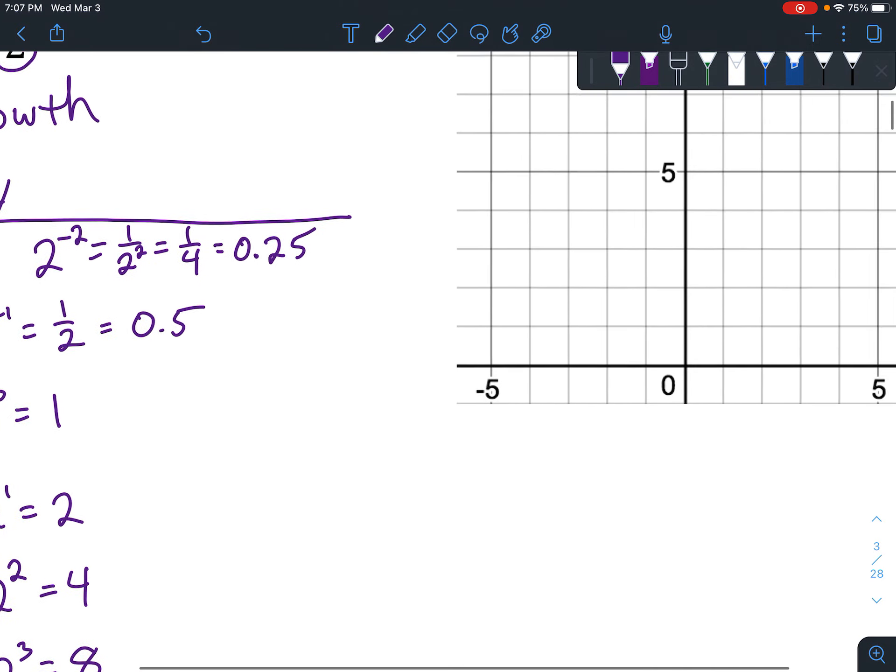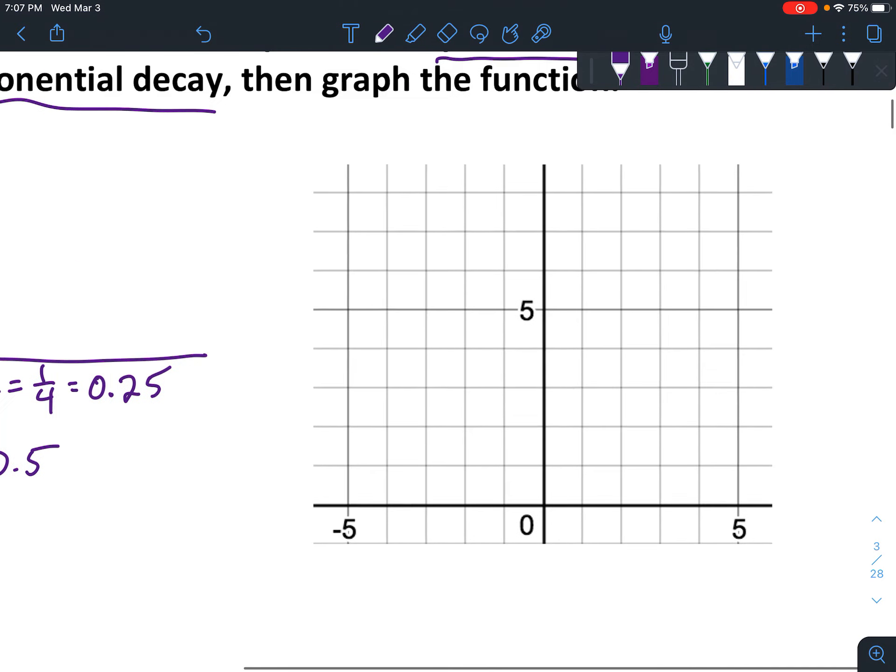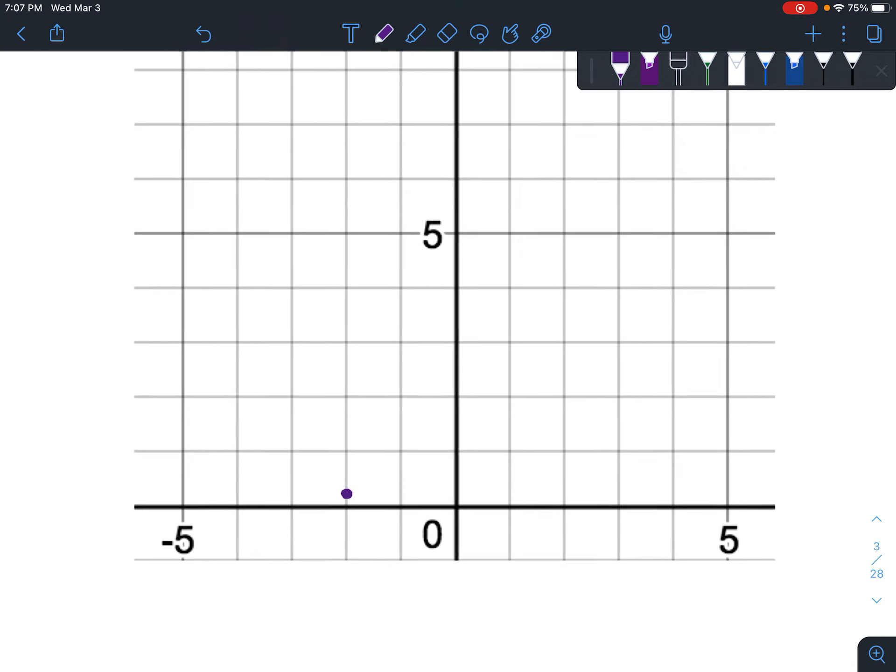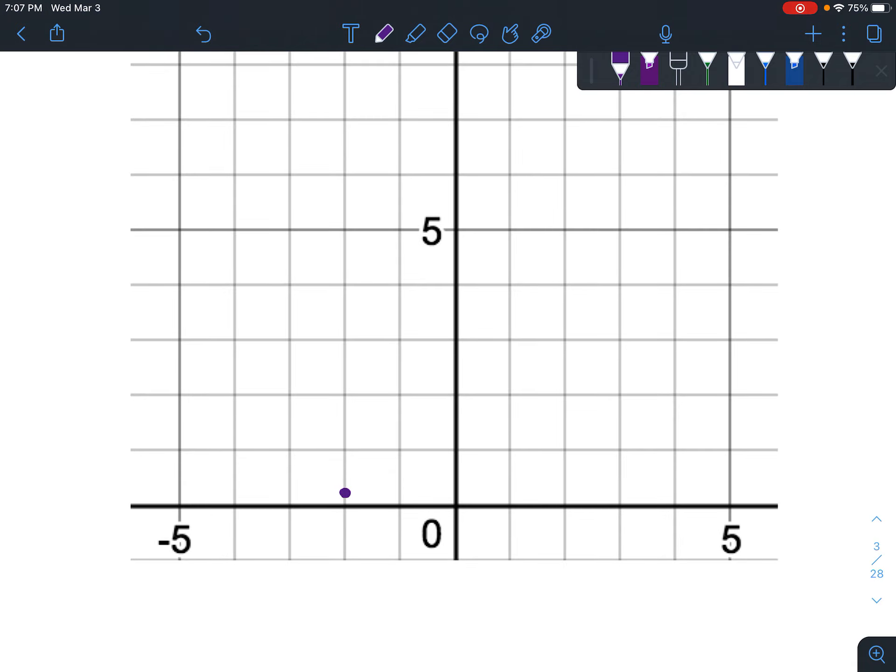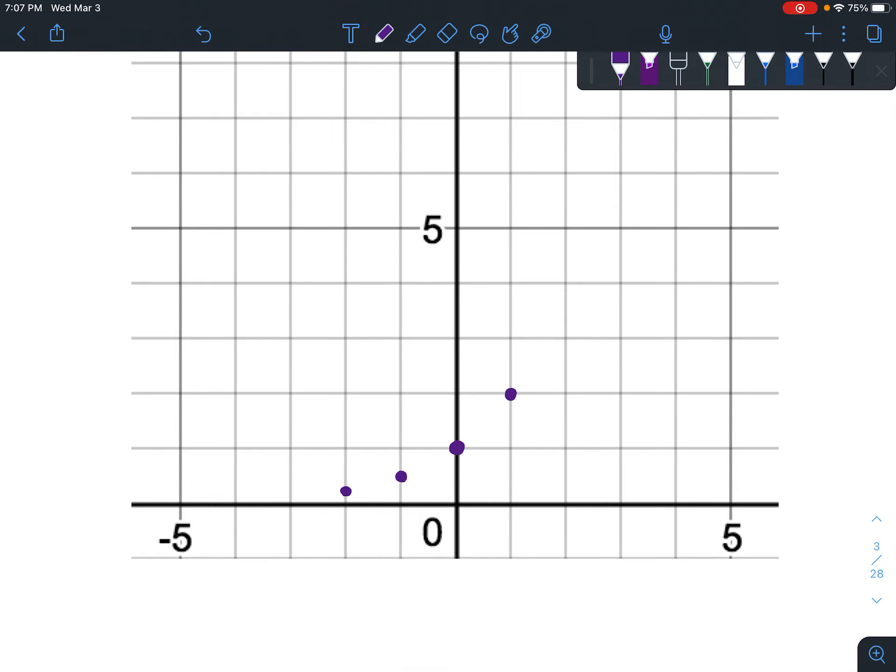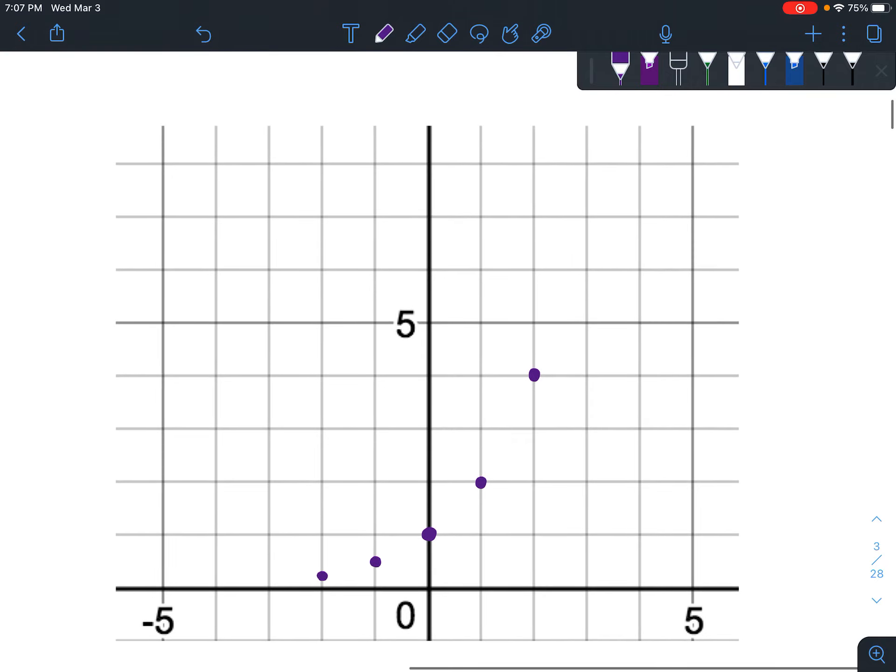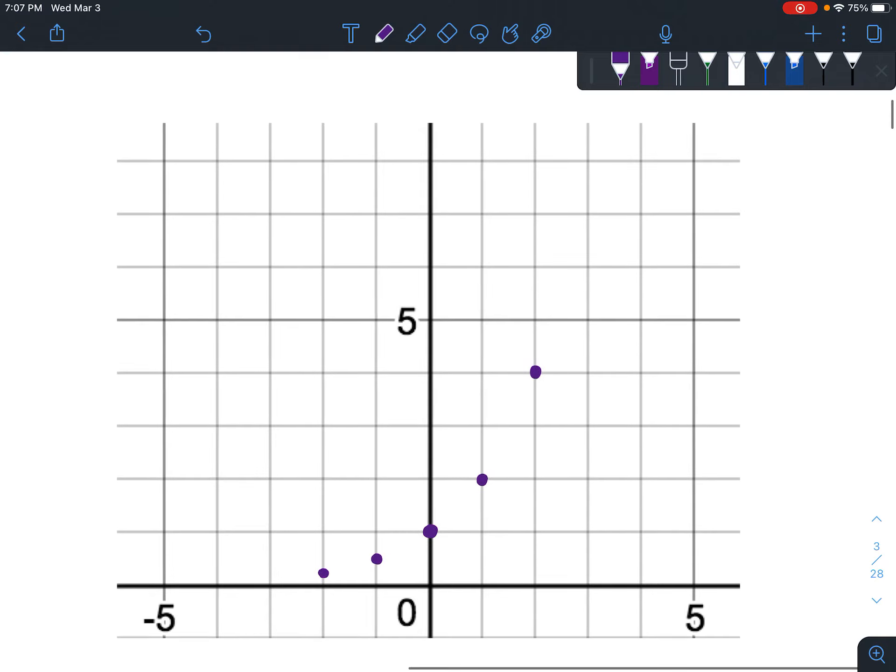Now let's go ahead and graph these points. So our first point is negative 2, 0.25. So 2 to the left, and then 0.25, you're going to have to kind of estimate, probably about right there. And then negative 1, 0.5. 1 to the left, and then halfway up. Next is 0 and 1. And then we have 1 and 2. Next is 2 and 4. And last we have 3 and 8. 2, 3, 8, so all the way up there. Okay, so you can see, if we had additional points to enter, you can see that it's going to start getting to be a very large number.